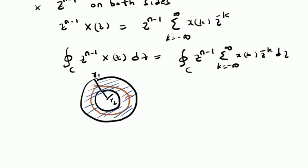Since the Z-transform converges in the ROC, we can interchange the integral and the summation to rewrite this as: summation k from minus infinity to plus infinity of X of k times the integral over the closed contour C of Z power n minus 1 minus k dz.